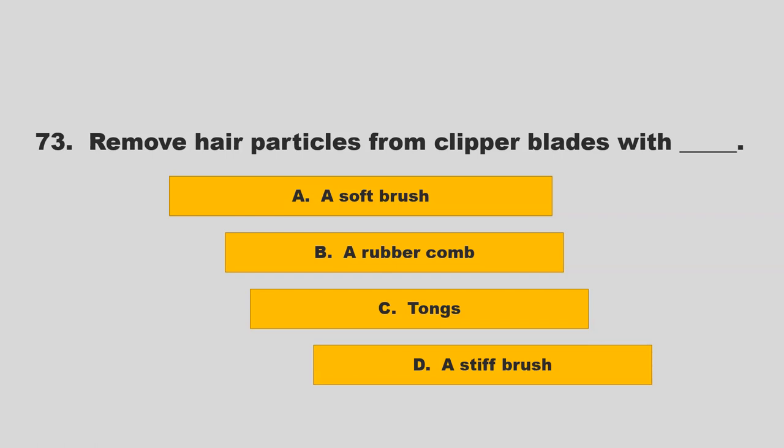Remove hair particles from clipper blades with blank. Options: a soft brush, a rubber comb, tongs, or a stiff brush. The correct answer is D: a stiff brush.